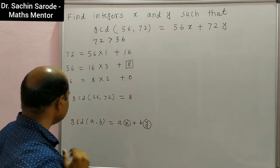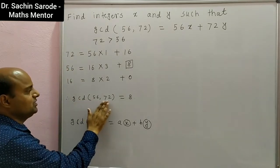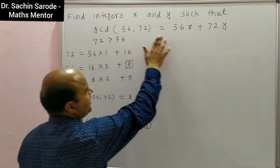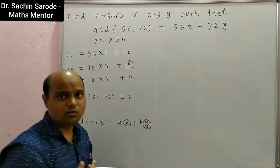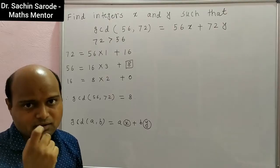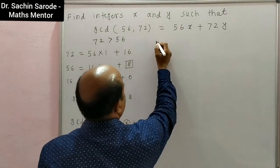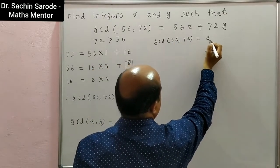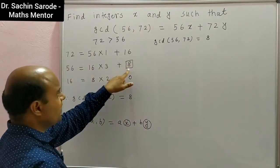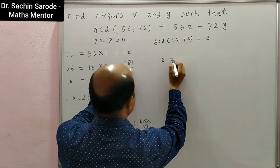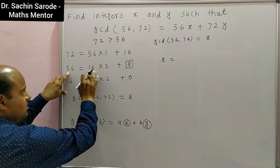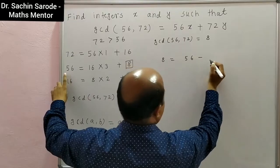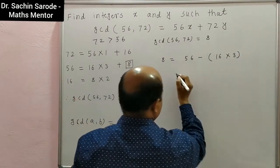Therefore, GCD of 56 and 72 is 8. Now we have to find x and y — that is our main problem. From the Euclidean steps, we can write 8 as: 8 = 56 − 16 × 3.